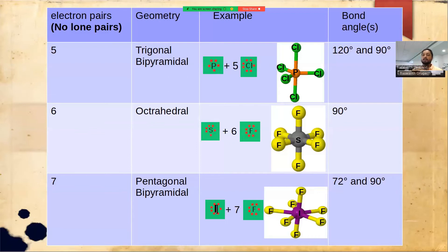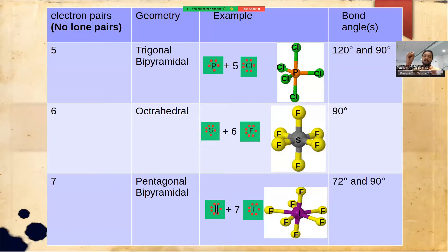These are all the cases discussed in the original VSEPR theory when there are no lone pairs — zero lone pairs, all bond pairs, meaning all electrons are involved in bonds. However, in many cases there are some unshared electron pairs localized on the central atom.